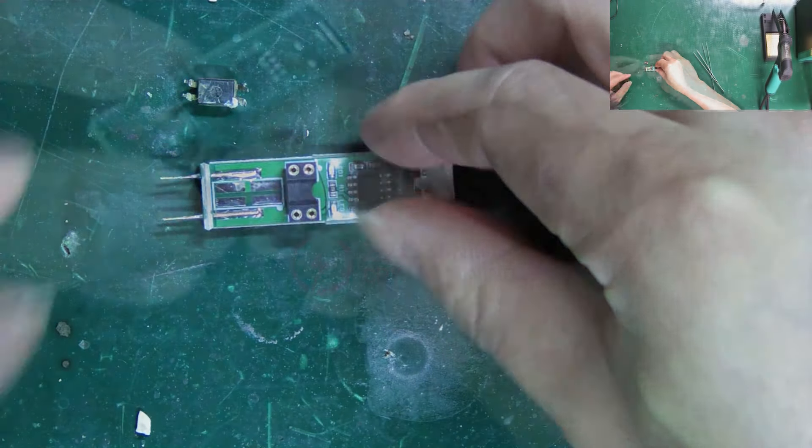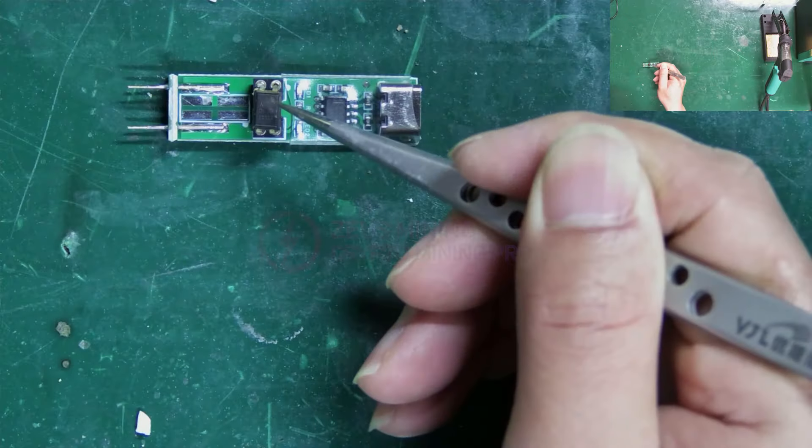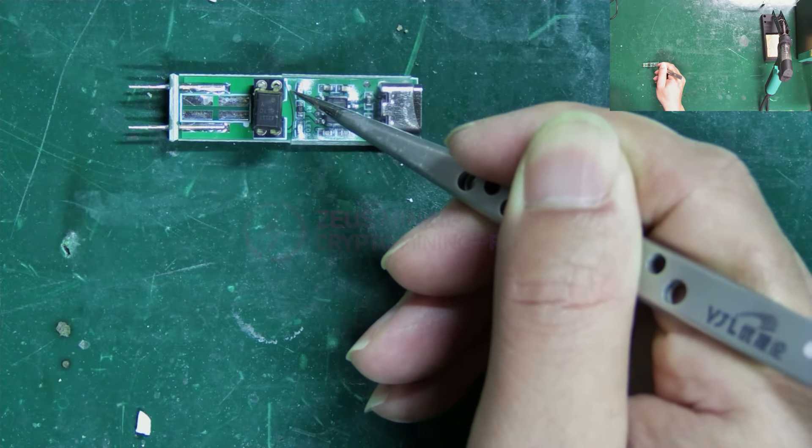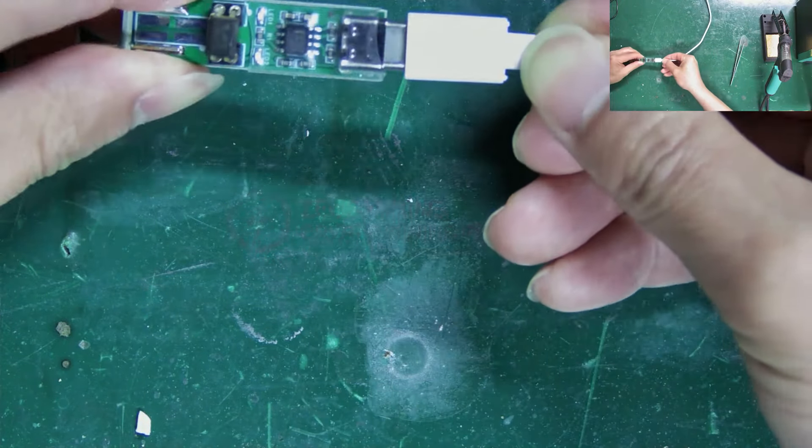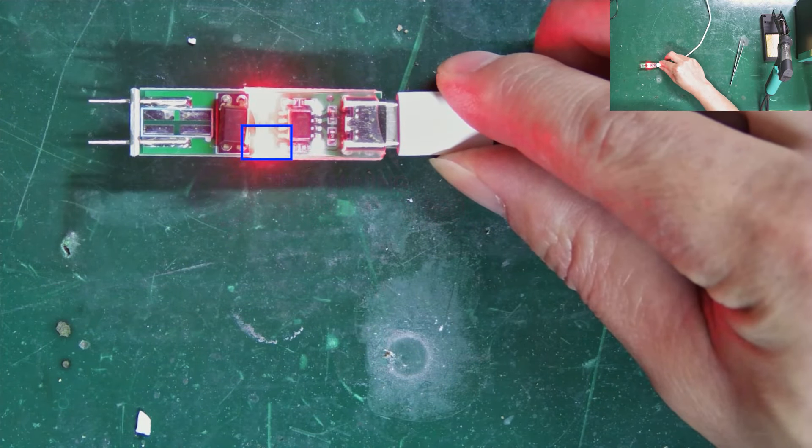Next, insert the testing seat into the tester. Then insert the optocoupler, making sure the pins align. Power it on again. We see the light flashing, which means this optocoupler is good.